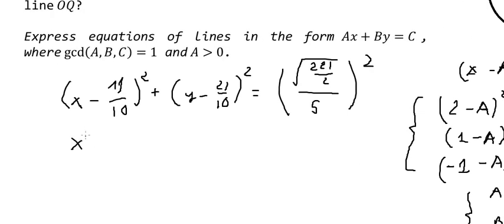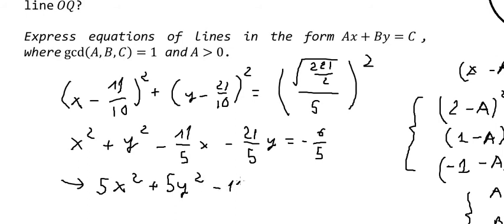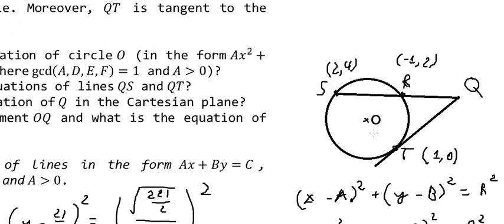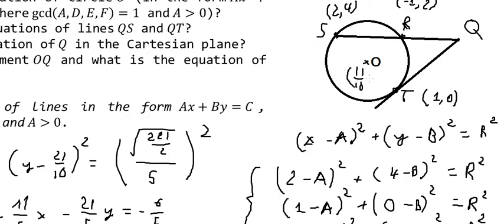After substituting the values, we get: x² + y² - (11/5)x - (21/5)y = -6/5. Or in simplified form: 5x² + 5y² - 11x - 21y = -6. So that is the equation of circle O.